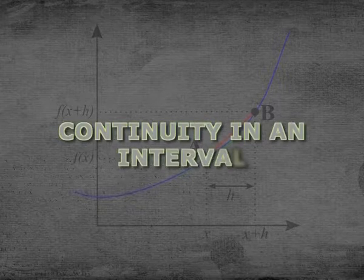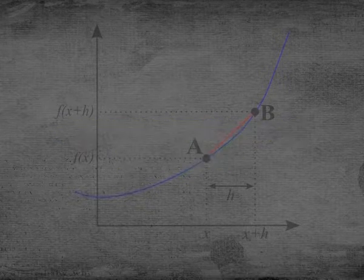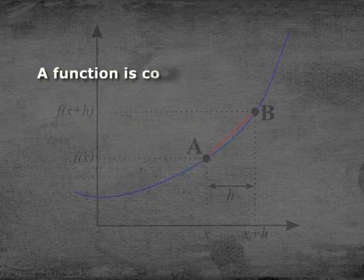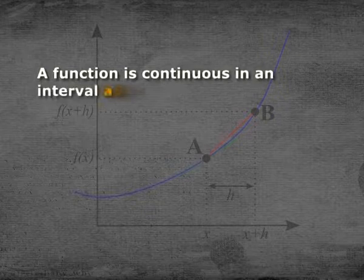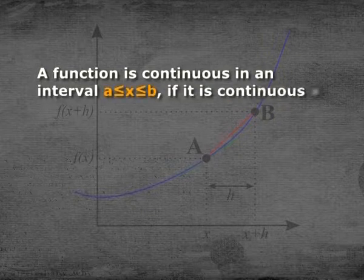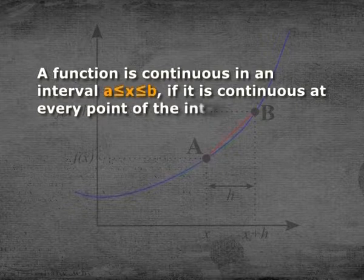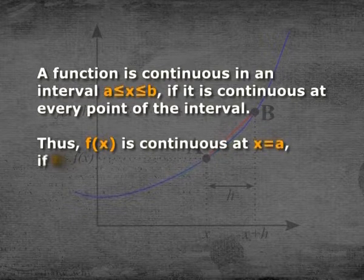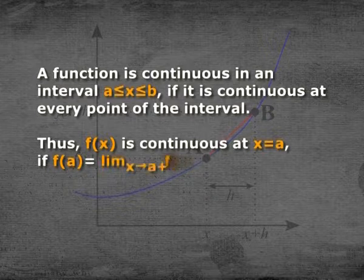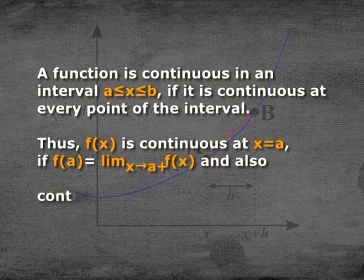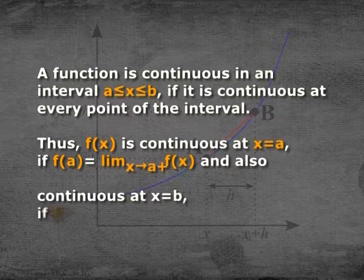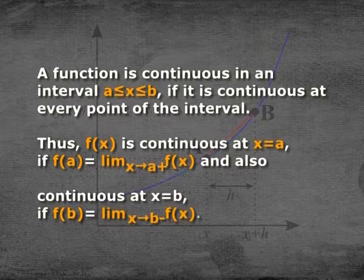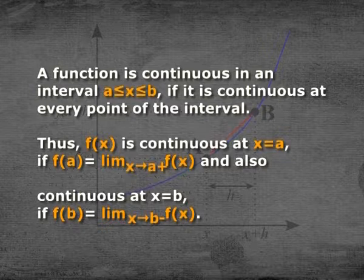Now let us come to the concept of continuity in an interval. A function is continuous in an interval a ≤ x ≤ b if it is continuous at every point of that interval. Thus, f(x) is continuous at x = a if f(a) equals limit x→a⁺ of f(x), and also continuous at x = b if f(b) equals limit x→b⁻ of f(x).